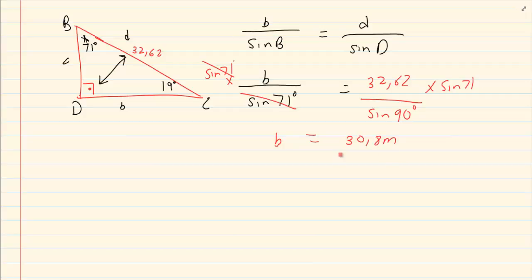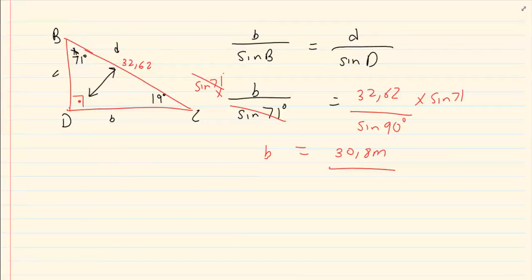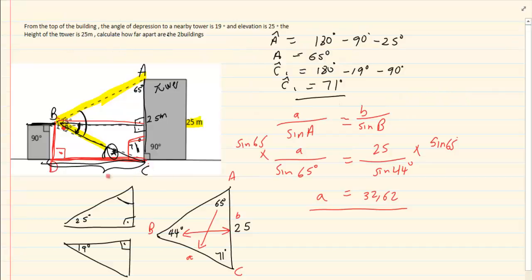So how far apart are the two buildings? The distance between the two buildings is 30.8 meters. Thank you for watching.